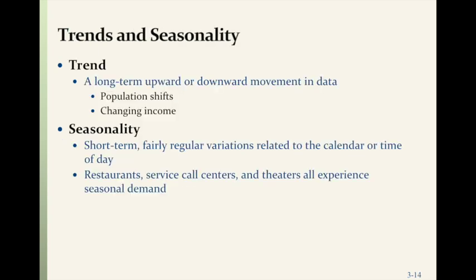There are two considerations: trends and seasonality. A trend is a long-term upward or downward movement in data, driven by factors like population shifts or changing incomes — for example, sales this year being higher than last year and the year before, slowly going up. Seasonality refers to short-term, fairly regular variations related to the calendar or time of day.